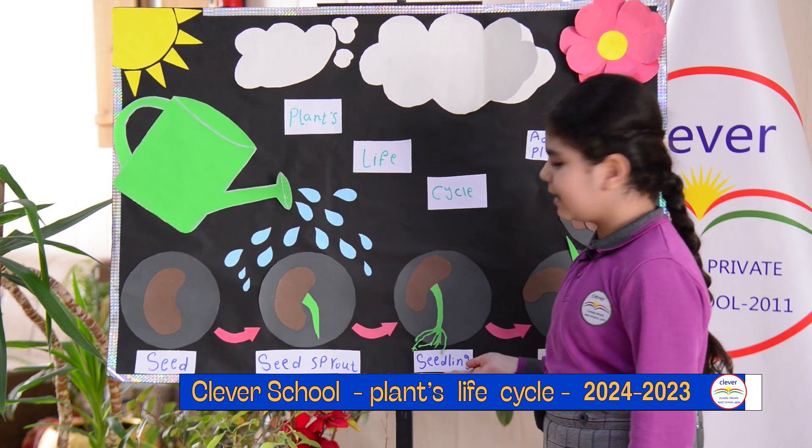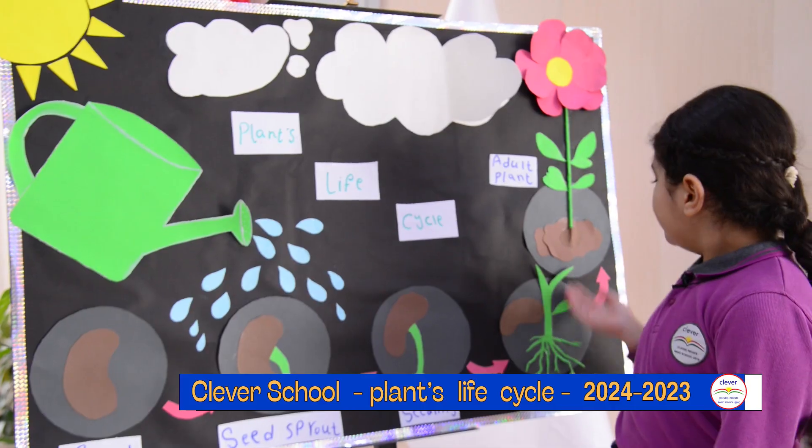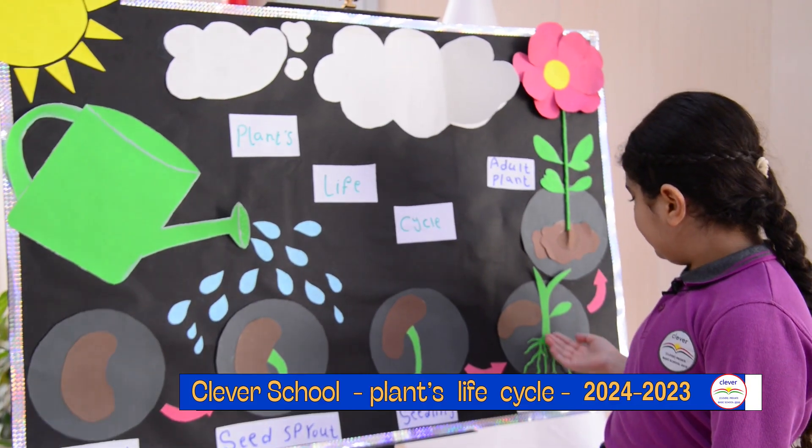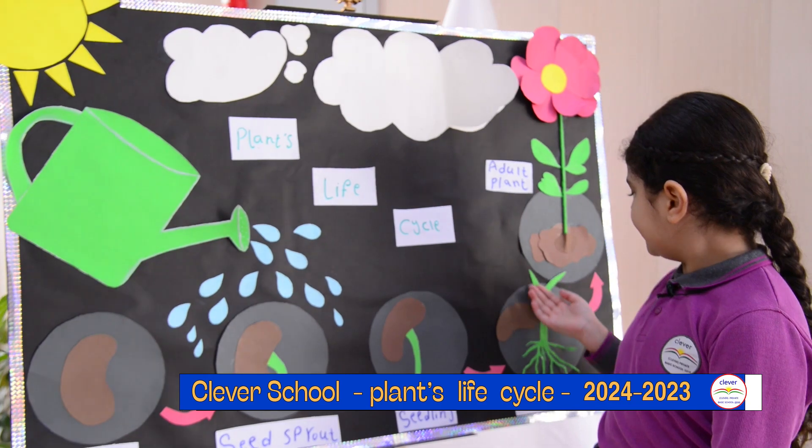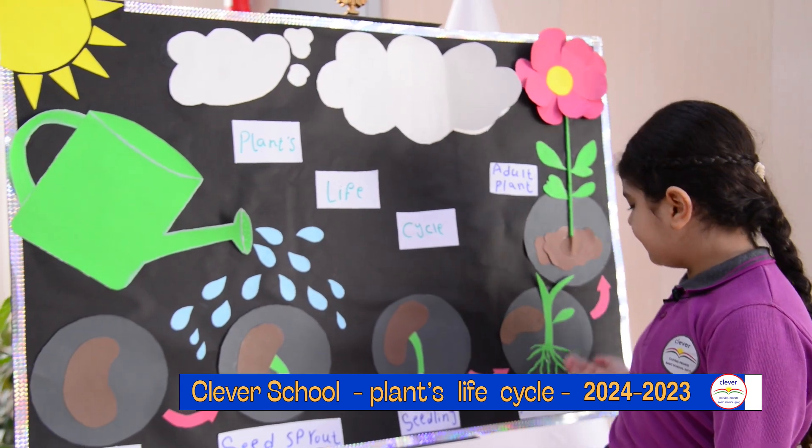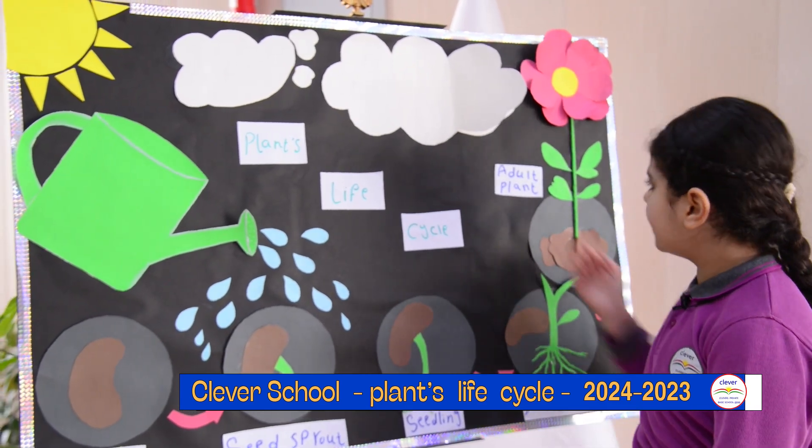The roots will come out and turn into a seedling. Young plant. There is a stem and some leaves, and it turns into a young plant.